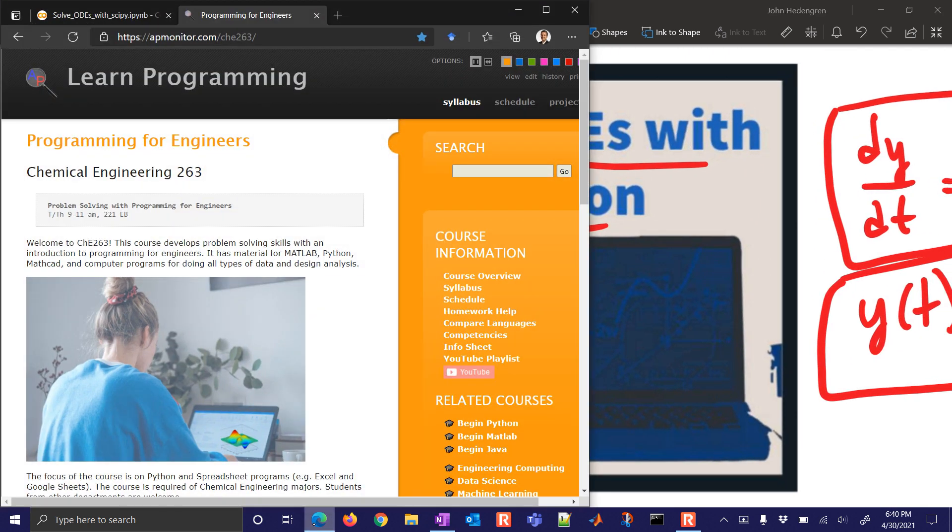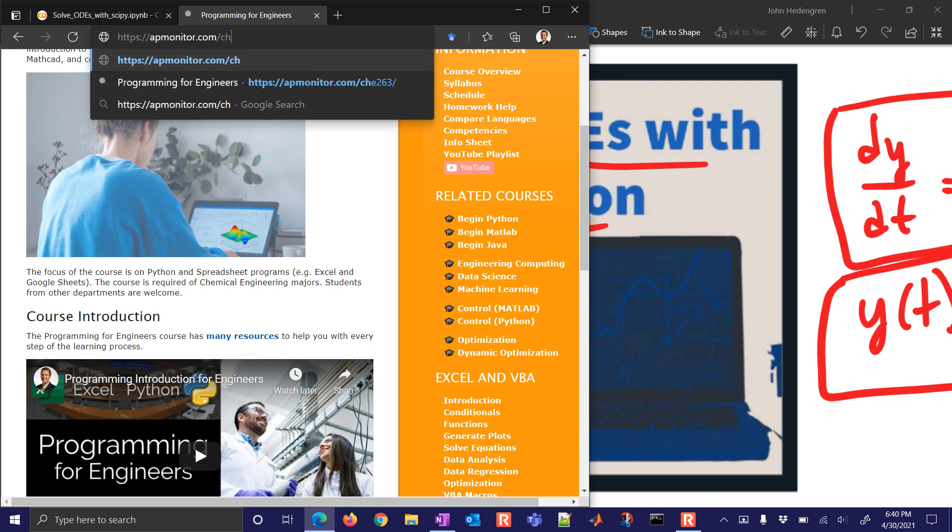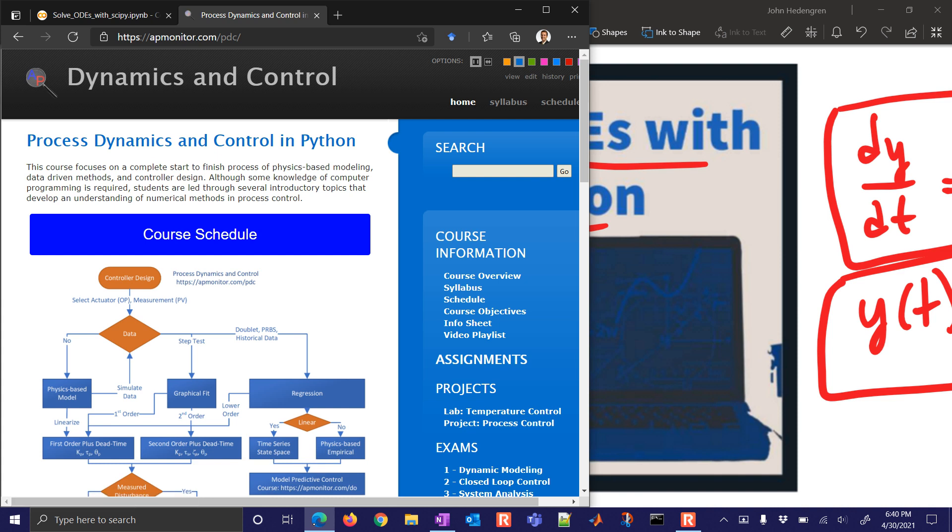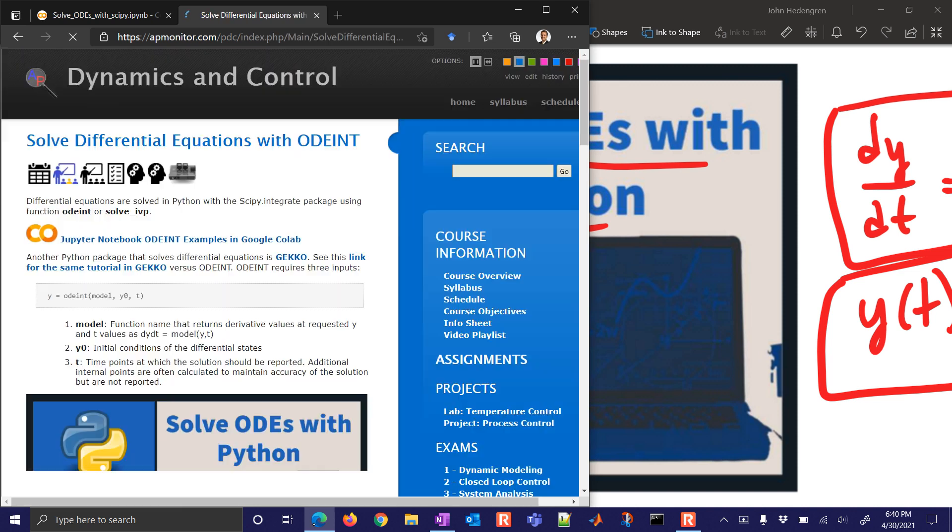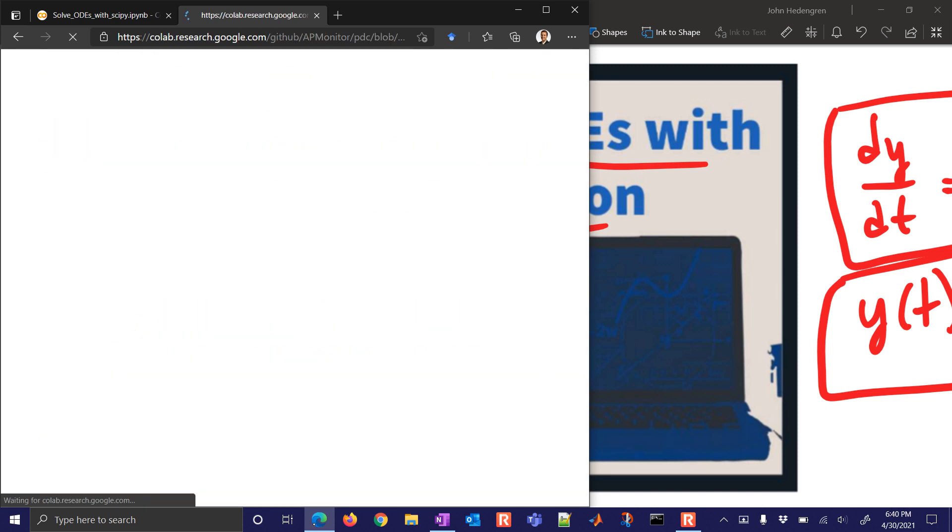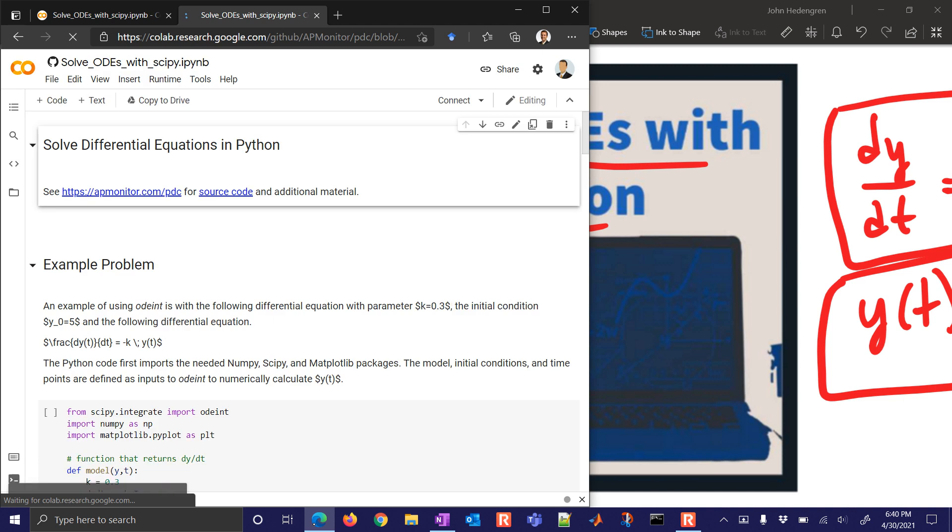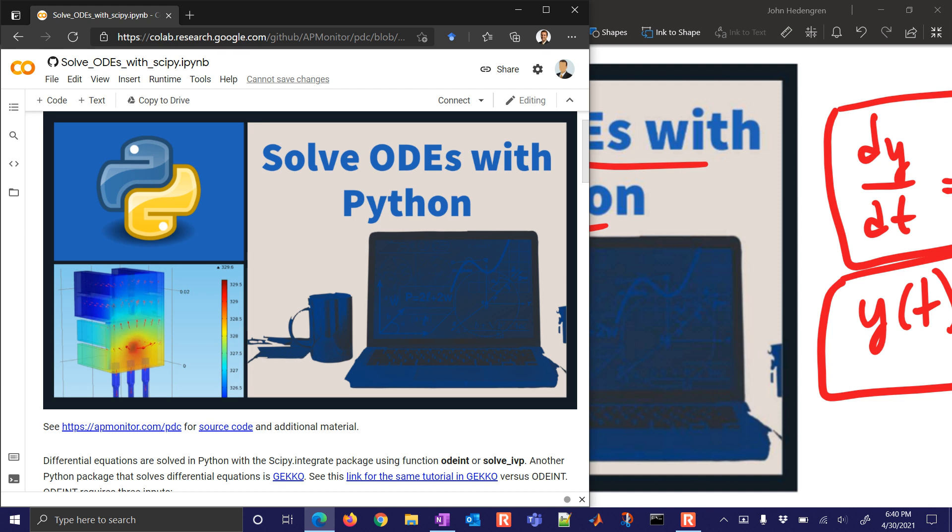So just to get started, there are some instructions here at apmonitor.com/CHE263, actually let me change that to PDC. This is the Process Dynamics and Control course. And if you come down here on the right, you'll see solve with odeint. And that's going to be this page that we're going to use to solve. And you can select this notebook right here. That will open up a Jupyter notebook with all these problems and the solutions. And let's just go through this together. I'm going to go ahead and just set up one problem with you, and then we're going to do four exercises as well.